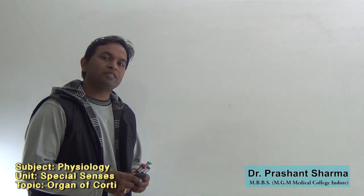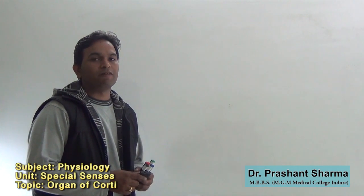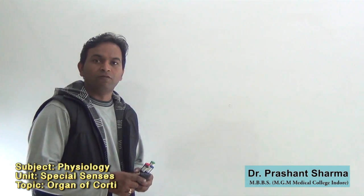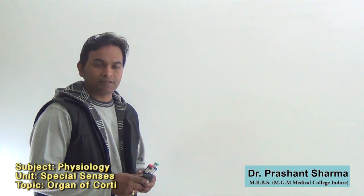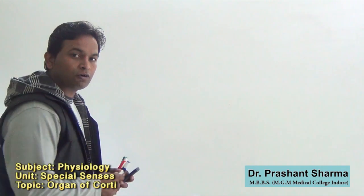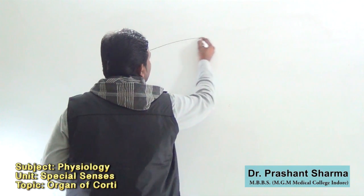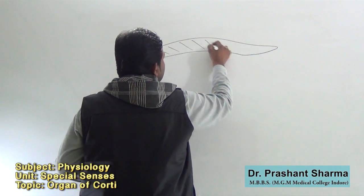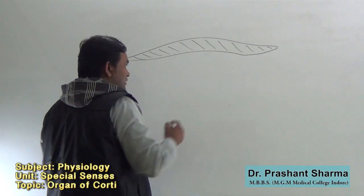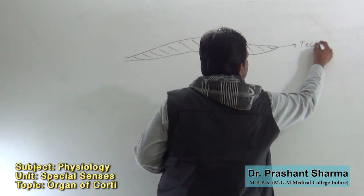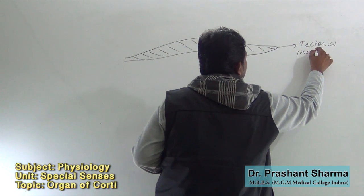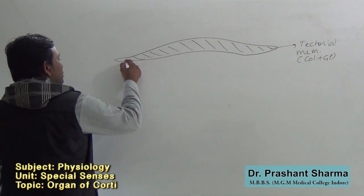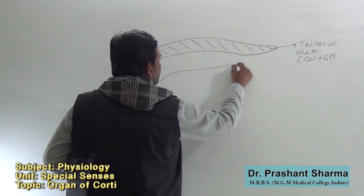Today we are going to discuss the structure of the Organ of Corti. It is a very sensitive structure in the scala media which consists of numerous hair cells or receptor cells which convert the auditory signals into nerve impulses. Here is the structure of the Organ of Corti. The tectorial membrane is a highly viscous and gelatinous membrane made up of collagen plus glycoprotein, and it rests over the hair cells.